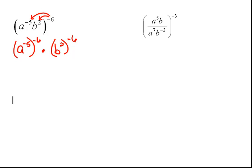Now once you have that understanding, you can start taking some shortcuts and just doing it sort of in your head and writing it down. But now we have power to power, so we have to multiply. So negative five times negative six would make a to the thirtieth power times. Again, we have power to power, so we should have to multiply. So two times negative six, that's going to make that a b to the negative twelfth power.